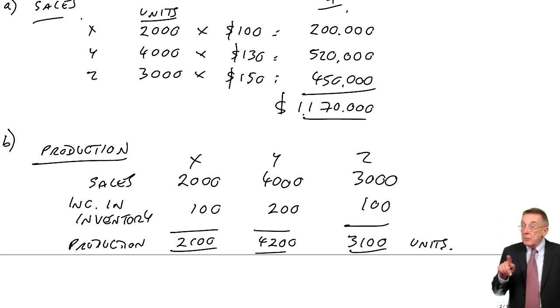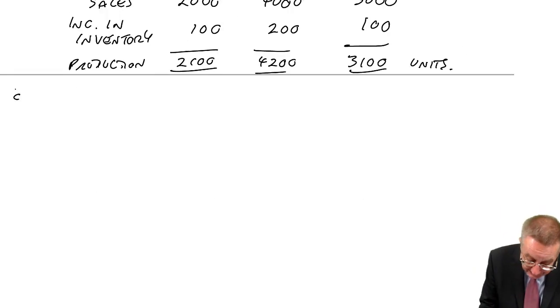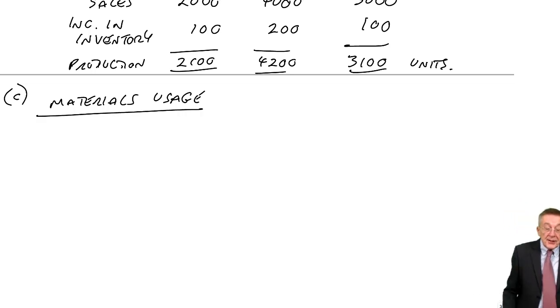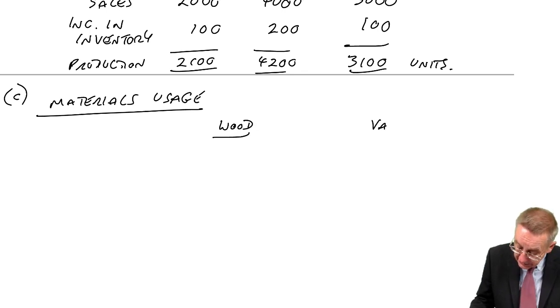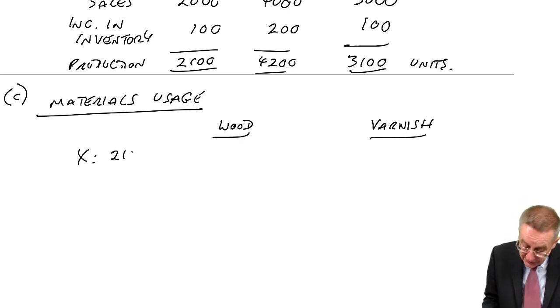Now we know how many we're going to produce, we can move on to materials usage budget. It's given us a standard usage of raw material. Each product is using wood and varnish. We couldn't work out what materials we're going to use until we'd worked out how many units we were going to produce. But now we know the production, we can do materials usage. I'll do them side by side. Wood and varnish. X, we're going to produce 2,100 units. Each one uses 5 kilos.